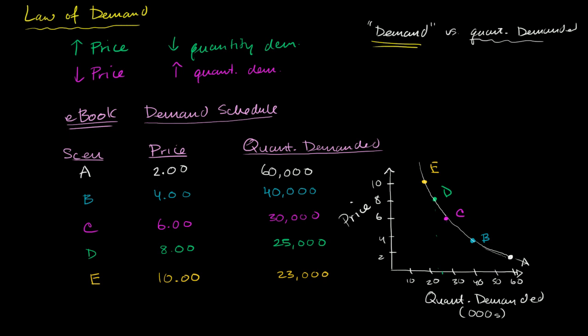We've been talking about the law of demand and how if we hold all else equal, a change in price - if price goes up, the quantity demanded goes down. And if price goes down, the quantity demanded goes up.